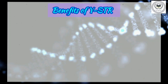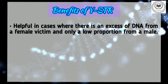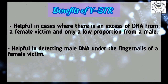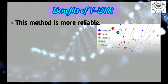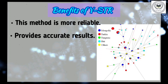Benefits of YSTR: First, it is helpful in cases where there is an excess of DNA from a female victim and only a low proportion from a male. Second, it is helpful in detecting male DNA under the fingernails of a female victim. Third, it helps in detecting male touch DNA on the skin and clothing belonging to the female victim. This technology is reliable and gives accurate results, which is why some foreign countries are using it for the identification of male accused in cases of crimes against women.